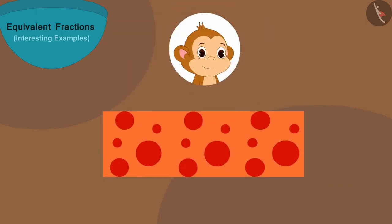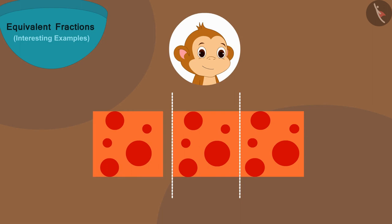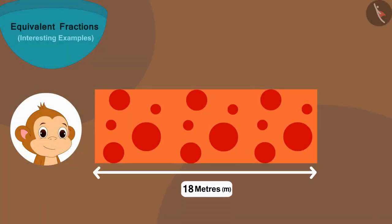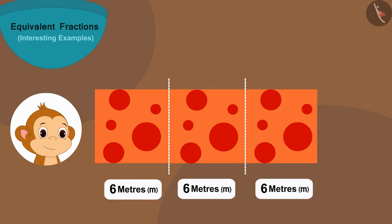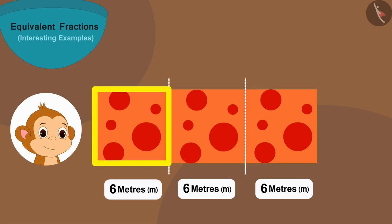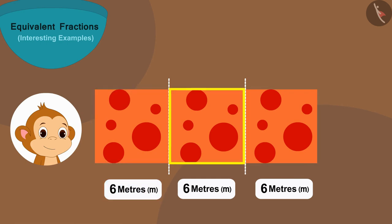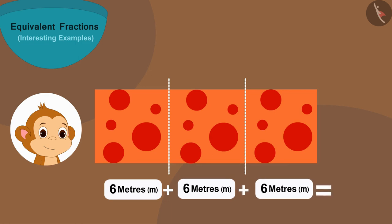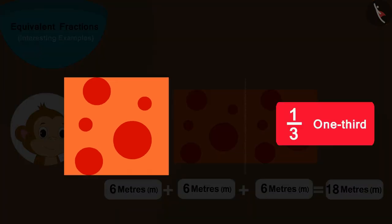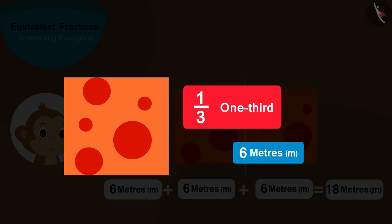Absolutely right! Babban will cut his cloth into three equal parts and take one part from it — that would be one-third of the cloth. If we divide 18 metres into three equal parts, each part will be six metres long. This first part is six metres, the second part is also six metres, and the third part is also six metres. Six plus six plus six equals 18 metres. So this one-third part of Babban's cloth will be six metres long.